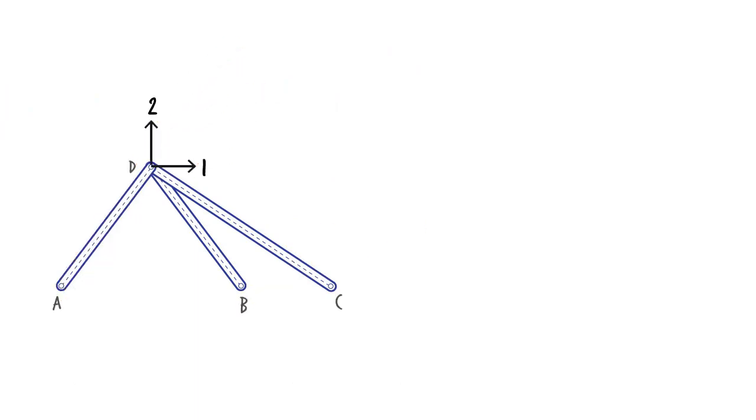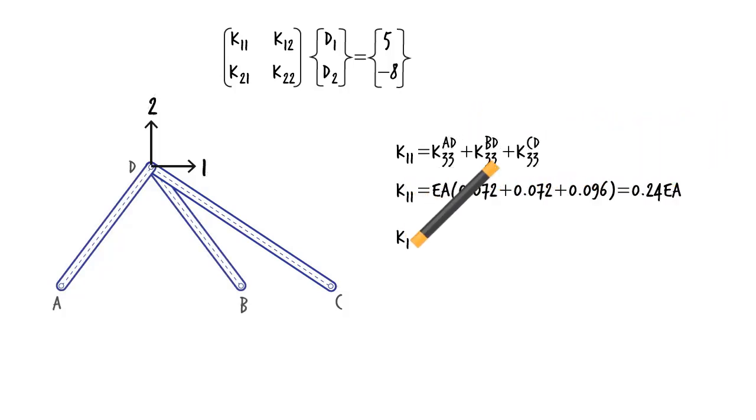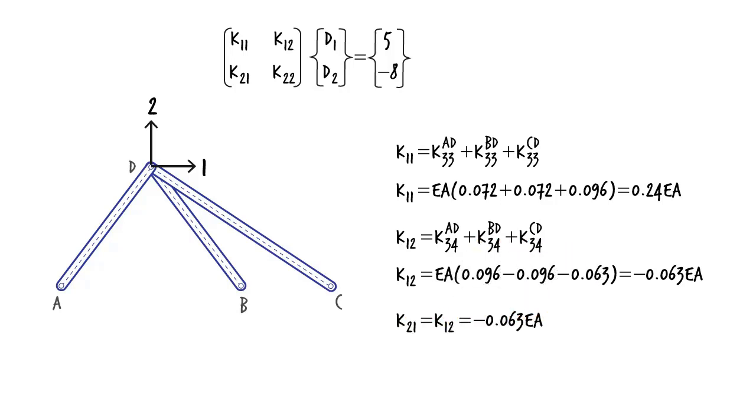We are now ready to determine the coefficients of the system stiffness matrix. K11 of the system matches K33 of AD, K33 of BD, and K33 of CD. Thus, substituting in the member stiffness matrices. K12 of the system matches K34 of AD, K34 of BD, and K34 of CD. Since the stiffness matrix is symmetrical, K21 equals K12. K22 of the system matches K44 of AD, K44 of BD, and K44 of CD.